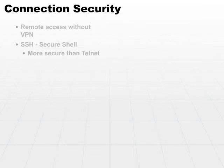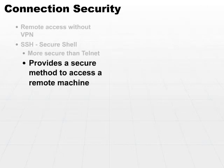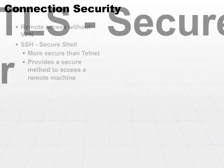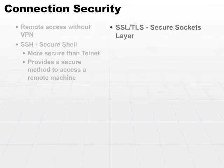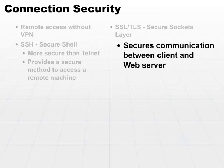SSH provides a secure method using encryption to access a remote machine. Additionally, you can also use SSL, or now TLS, which refers to a secure socket layer. SSL and TLS provide a layer of communication, which again uses encryption, that allows a web client and a web server to communicate.